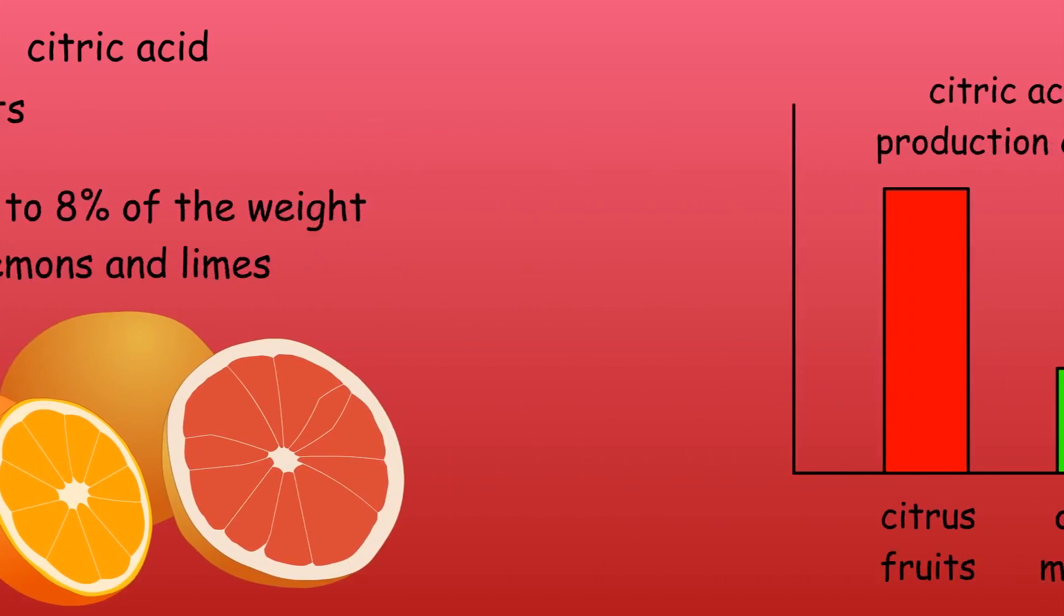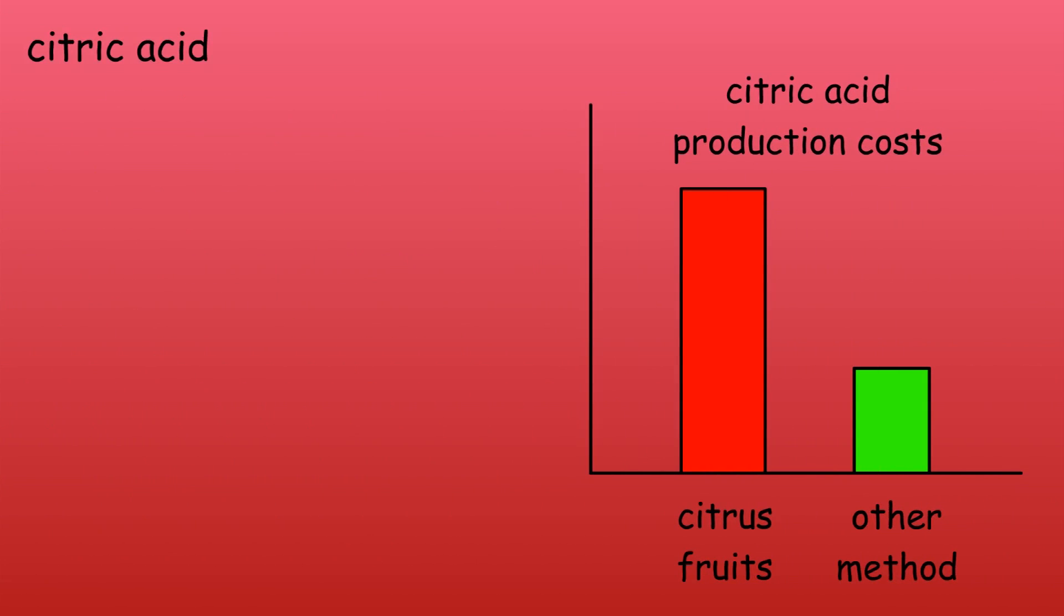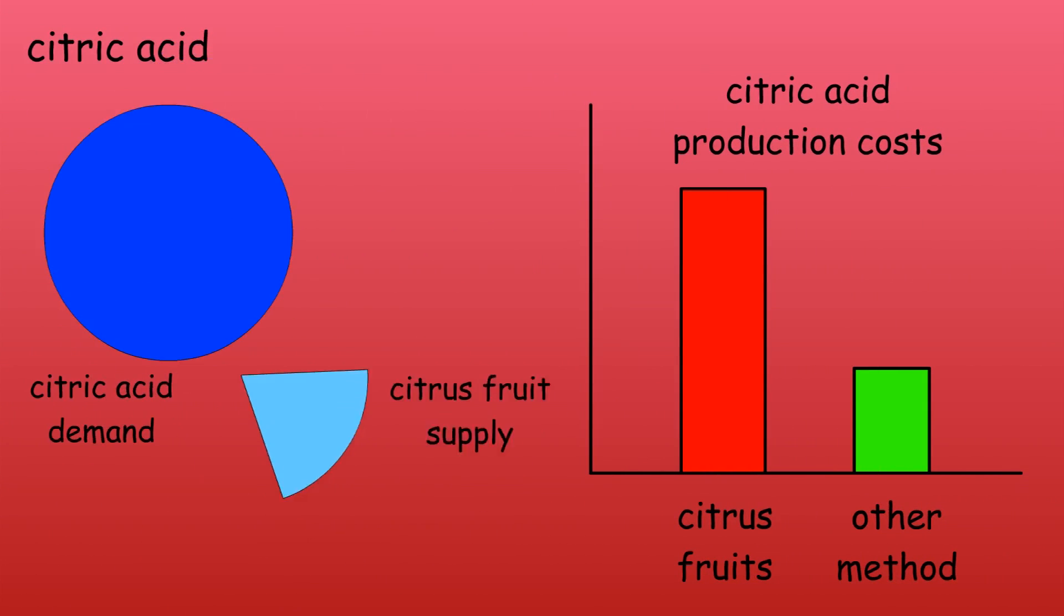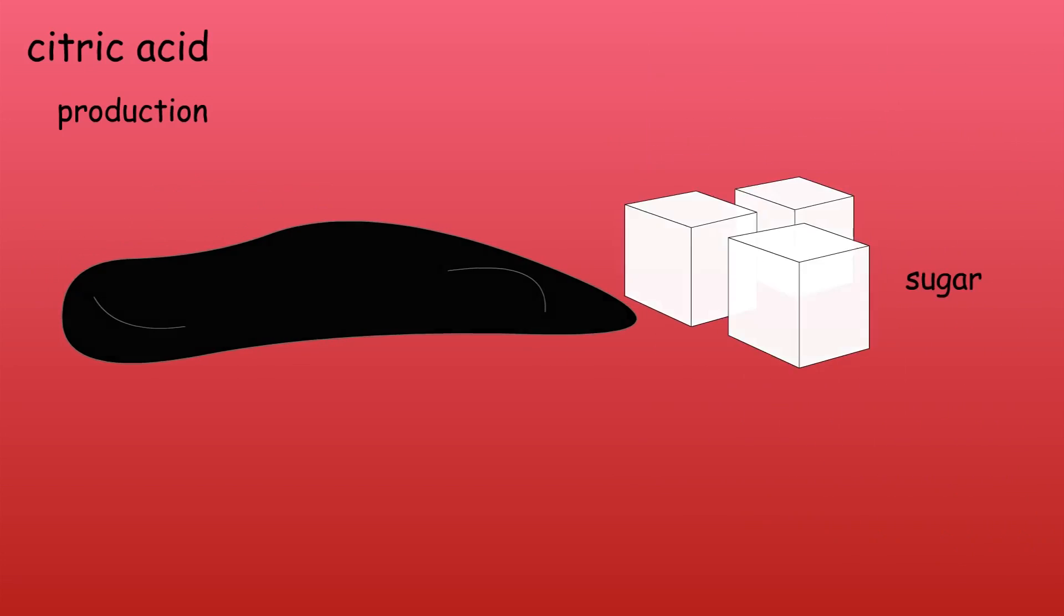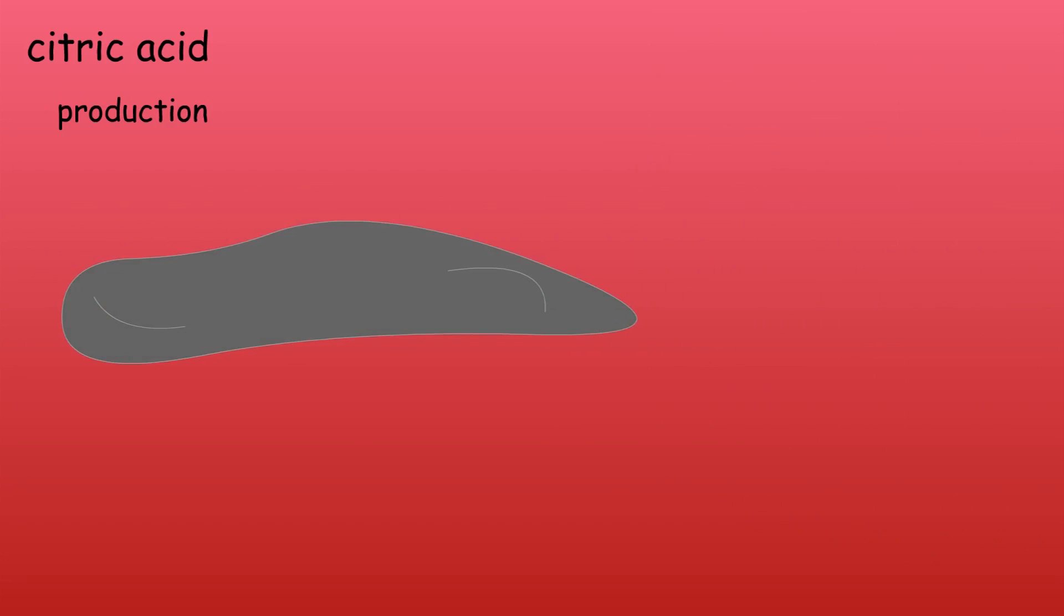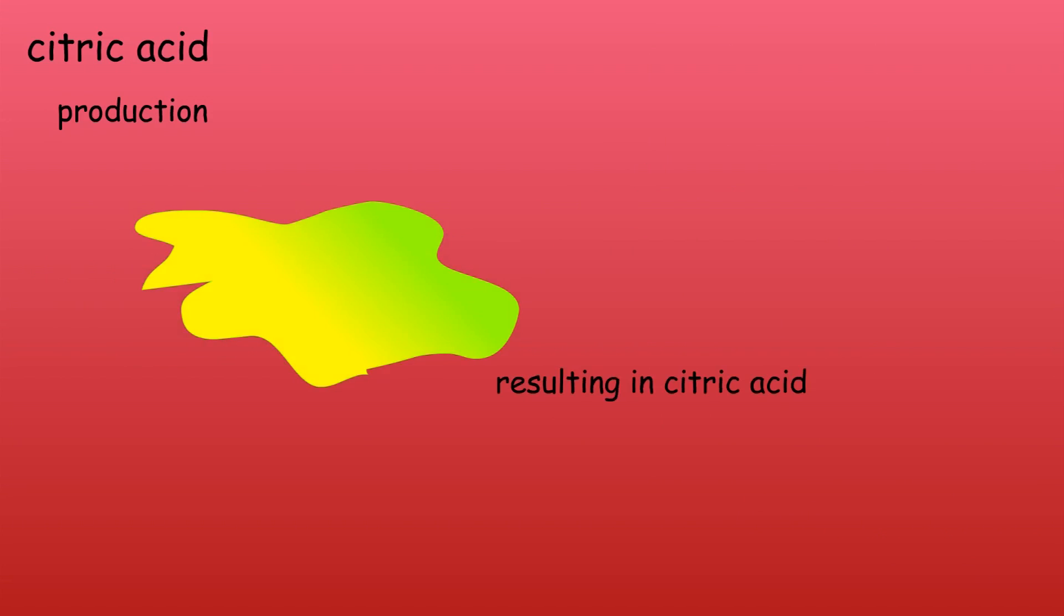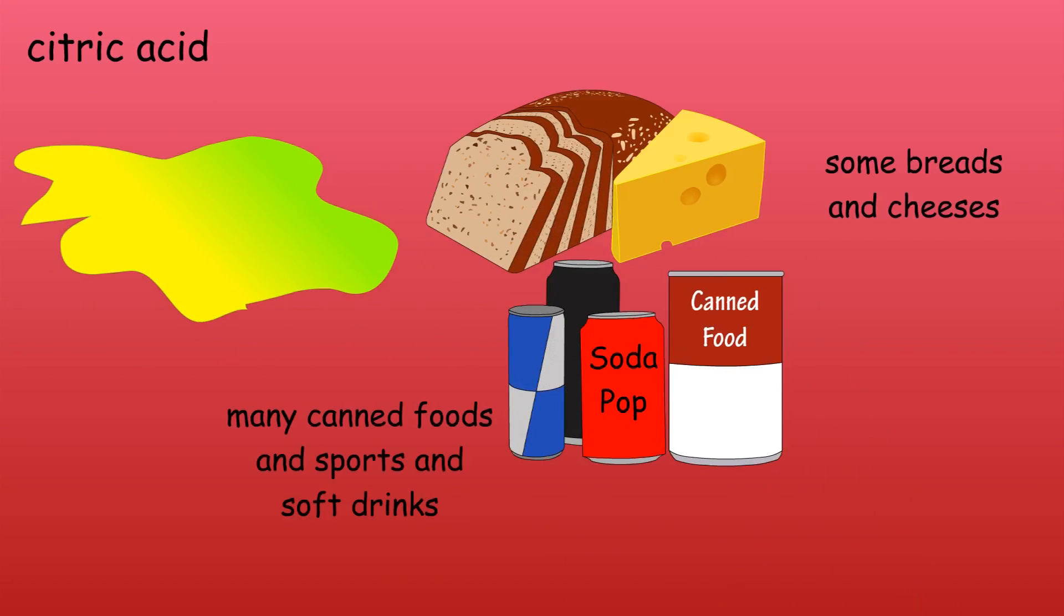However, there is a much less expensive way to produce the acid, and the demand for citric acid far outweighs the supply of citrus fruits available. The way most citric acid is made is by cultivating a mold called aspergillus niger, which causes black mold on certain fruits and vegetables. Aspergillus niger is fed sucrose or glucose, which is sugar, and then the resulting fermented compound is processed to yield citric acid.